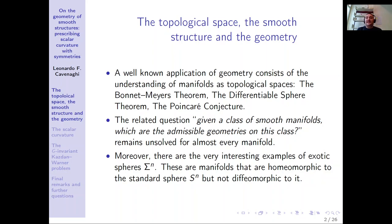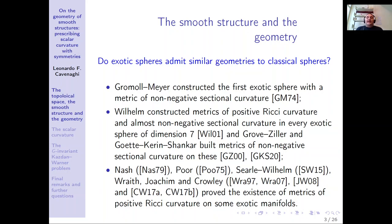If one considers a smooth manifold, which admissible geometries it admits is not known for almost every class of smooth manifolds. Moreover, there are very interesting examples of exotic spheres — manifolds that are homeomorphic to the standard classical sphere but not diffeomorphic to it, as first introduced by John Milnor. There is the widely open question: do exotic spheres admit similar geometries to classical spheres?